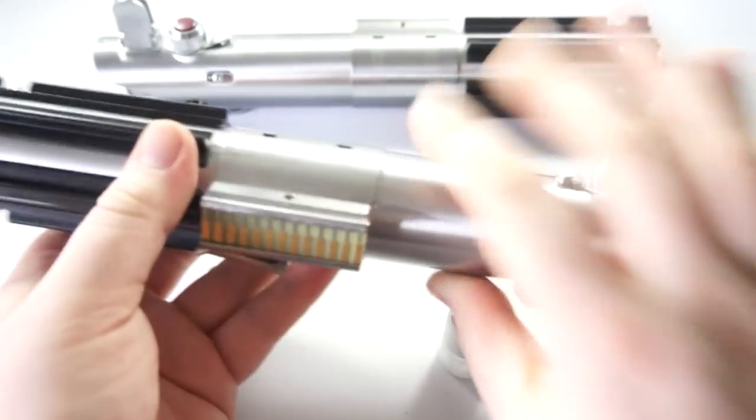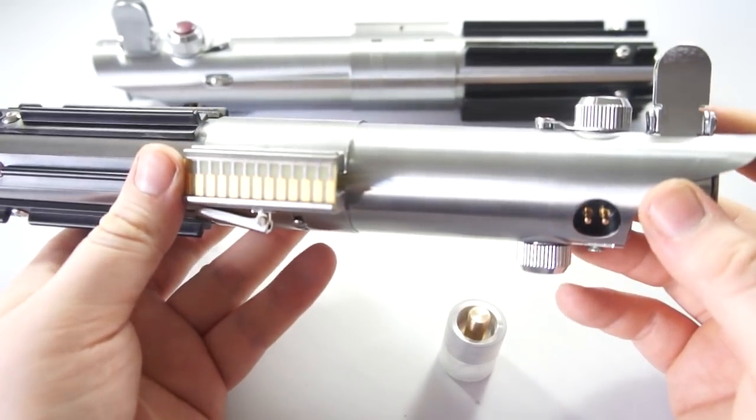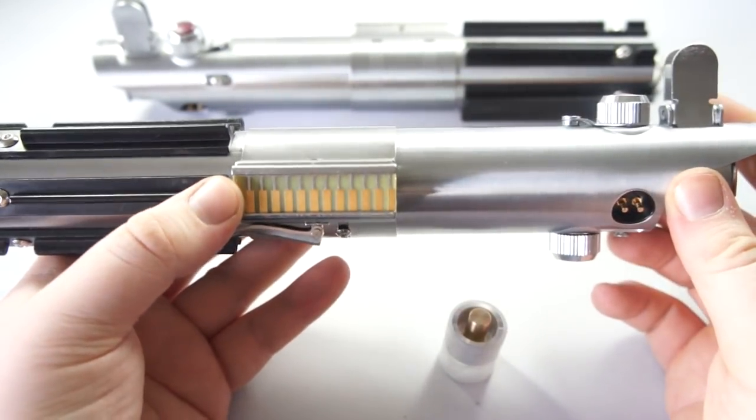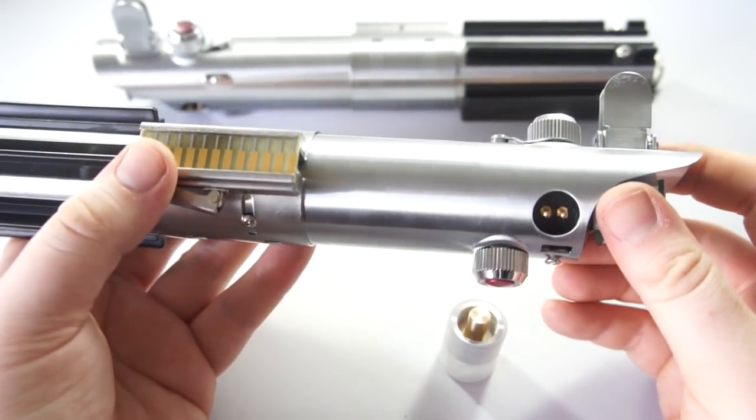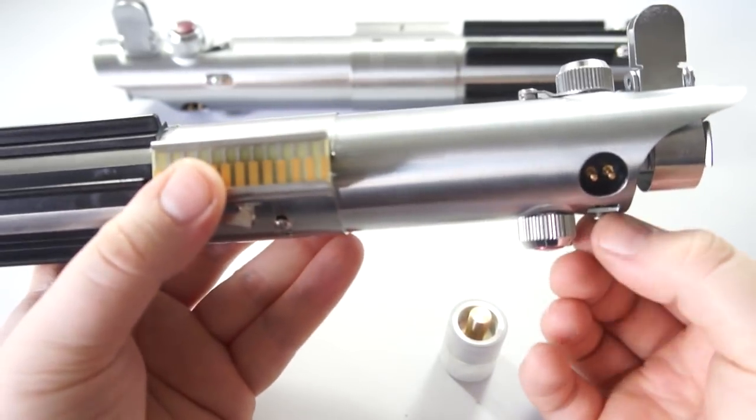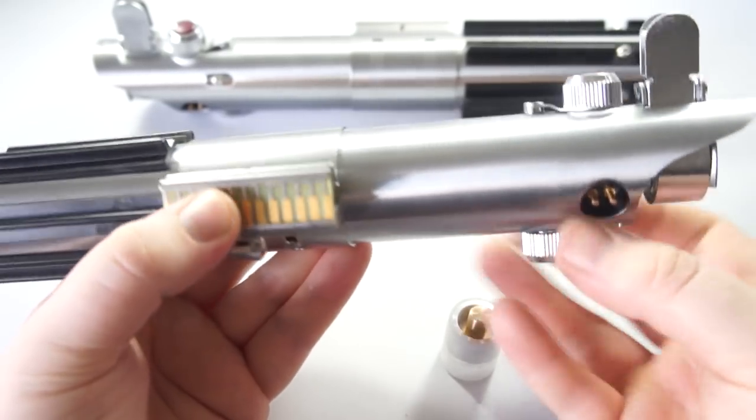And then we've got Oli's one here. Oli opted for the ESB version, so we've got the ESB style clamp card. Two red buttons there, instead of the one button and the glass eye. Blade retention is also the same method, so it's just this slotted screw here.